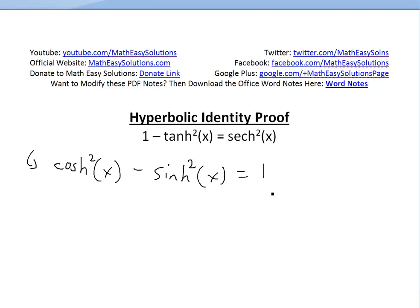Now we just divide both sides by hyperbolic cos squared of x. We divide both sides by everything, so we're not changing the function. We divide by cosh squared x right here, so we divide this out.